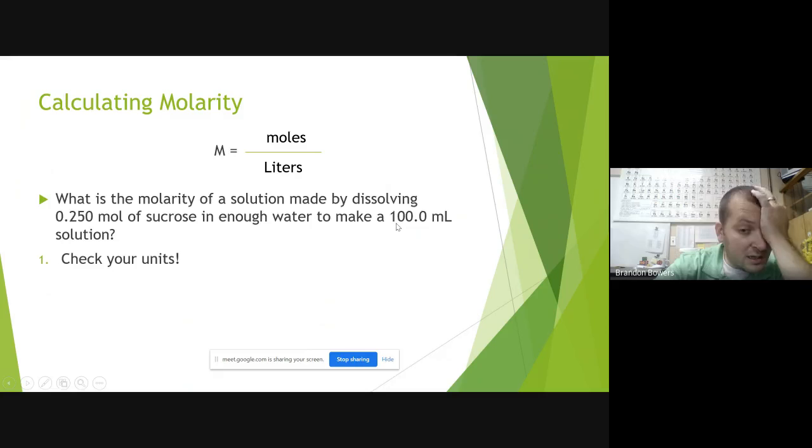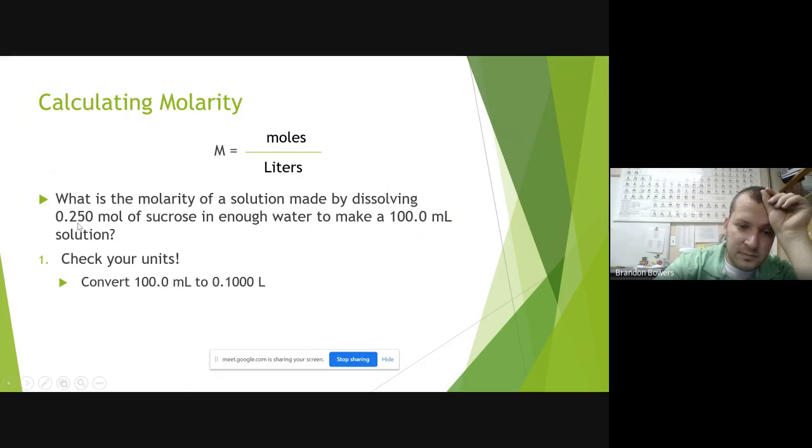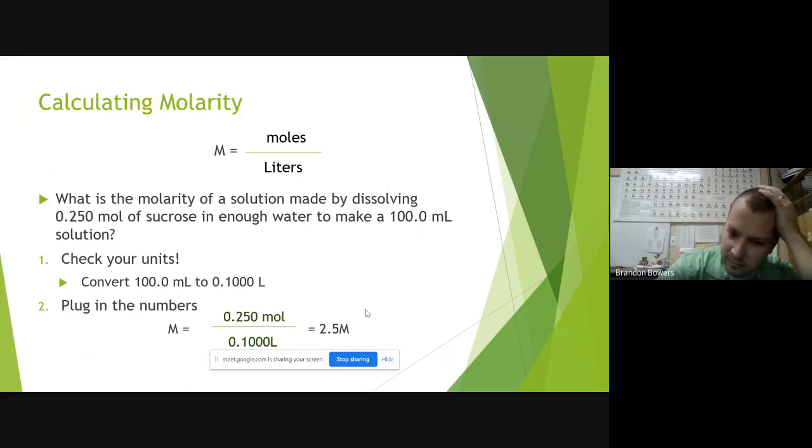So to convert that to liters, you move the decimal over three spots to the left. So you're going to have 0.250 divided by 0.1 liter. And you end up with your answer in molarity.